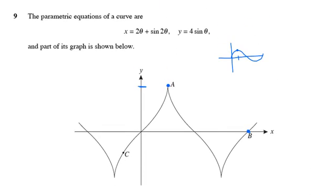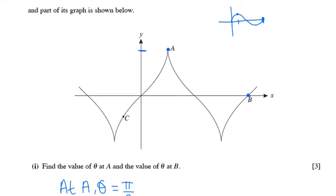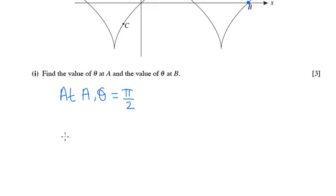Similarly, at B, this is the third time that y is equal to 0. And y is 4 lots of sine theta. So it's the third time that 4 sine theta equals 0. And that is obviously here when theta equals 360 or 2 pi. So at B, theta is equal to 2 pi.